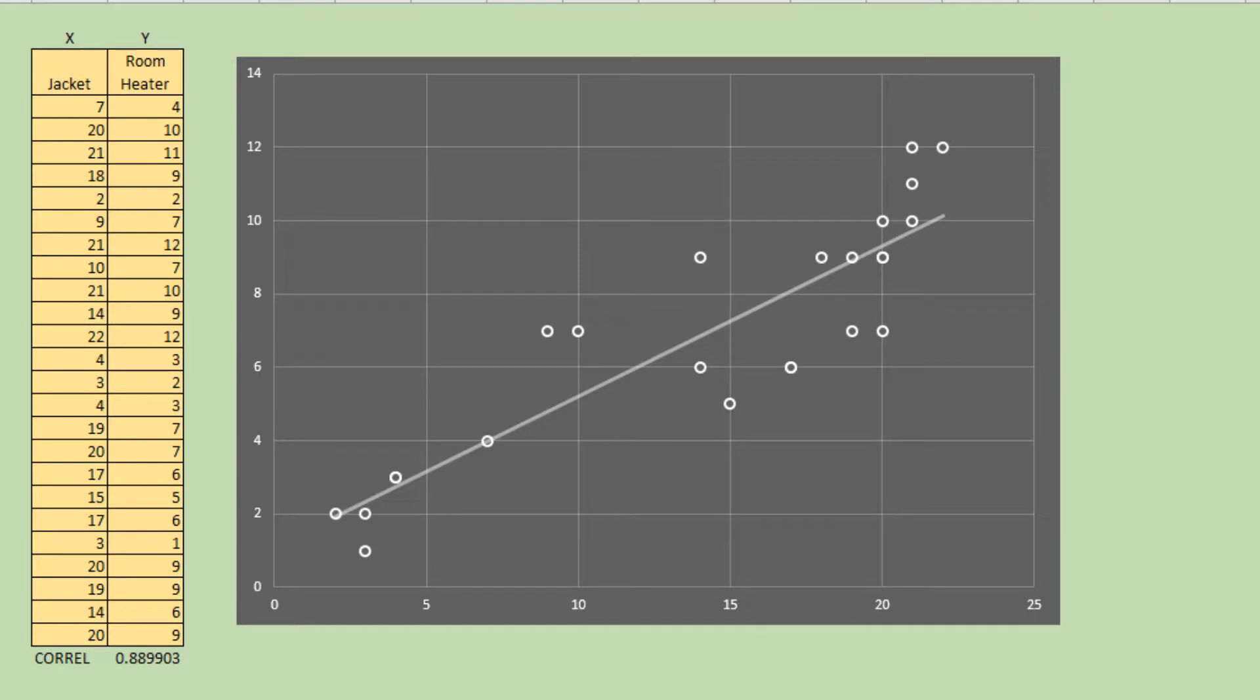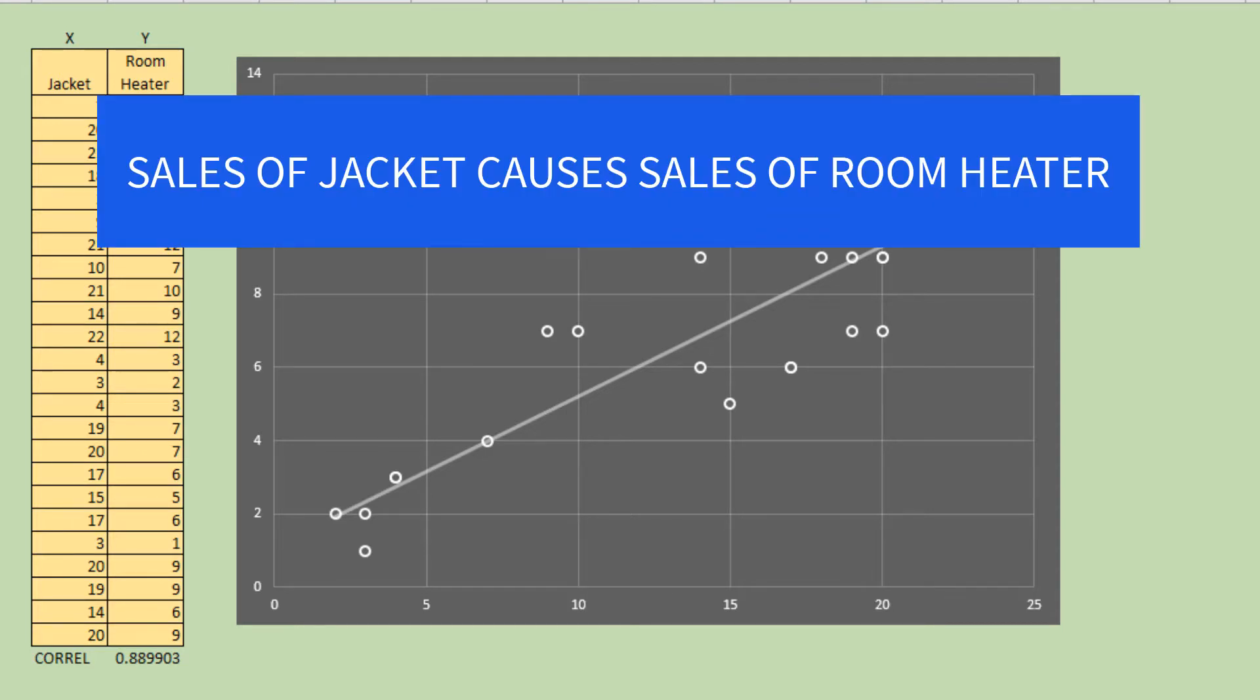Based on our previous example, the two variables, namely increase in sales of jacket and increase in sales of room heater, are positively correlated. However...